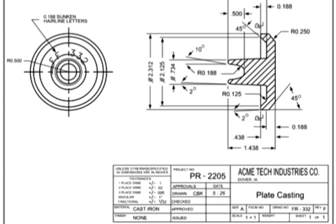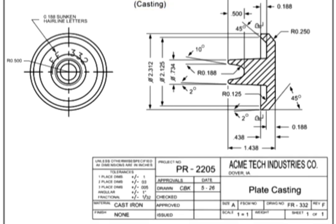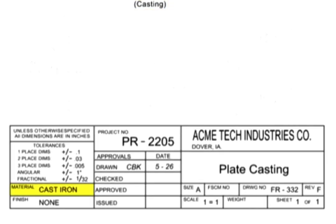As such, there are also a variety of detail drawings depending on the way in which a part is generated. A casting drawing is a type of detail drawing for parts made by casting or molding. The material for the part is typically called out in the material block, although it can sometimes be found in the notes section.